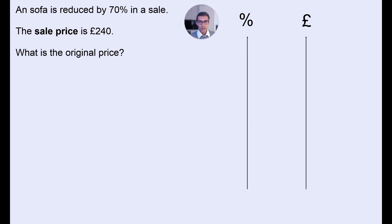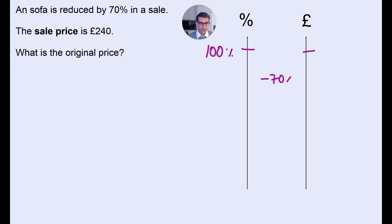Next question: a sofa is reduced by 70% in a sale. The sale price is £240. What's the original price? Pause the video and have a go. So we know that 100% is the original price. The sale price is £240 and that's a 70% reduction, so minus 70%. You go from 100% down to 30% — it's a big discount. 30 doesn't go into 100, so instead we're going to go down to 10%, which is usually a friendly one to use.